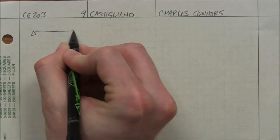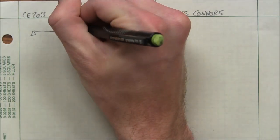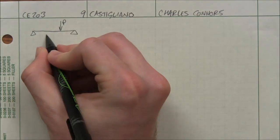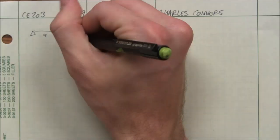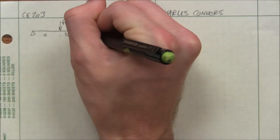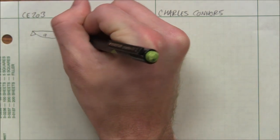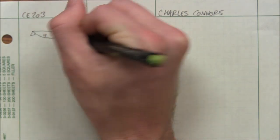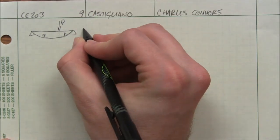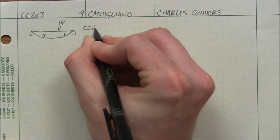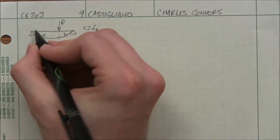So again, we have our simply supported beam, concentrated load P, at distance A from the left and B from the right. And we want to know the deflection directly under that load. Obviously, this is exaggerated. So we're really looking for EI times delta B is what I'll call it.